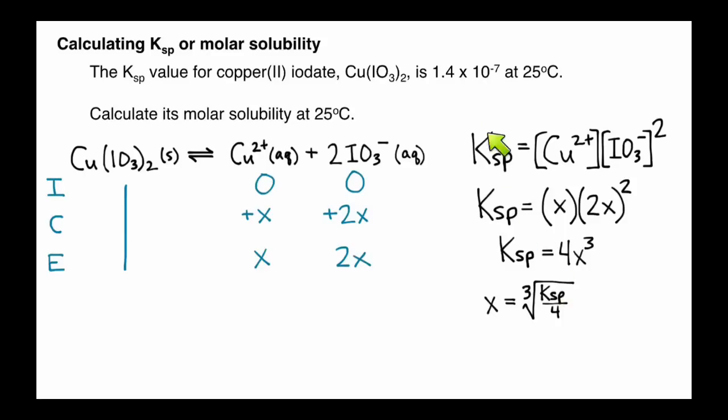We know that Ksp is 1.4 times 10 to the negative 7th, divide that by 4, take the cube root of it, and you'll end up getting 0.0033 molar.